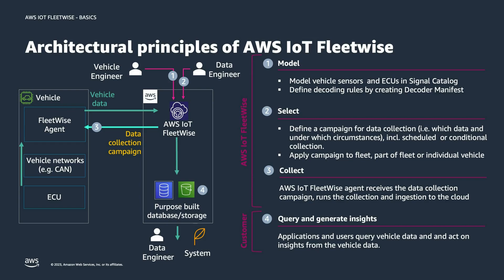We collect the data according to the data collection campaign running on the vehicle, and send it to storage — Timestream or S3. Step number four is where FleetWise doesn't play a part anymore. The responsibility of FleetWise ends with delivering the data to storage. This is where you build your systems on top: your applications — machine learning, ETL applications — to gather the insights. You then take those insights and go back to step two: do you need different data? This is where we close the data loop.